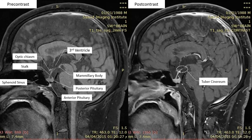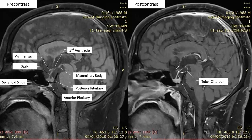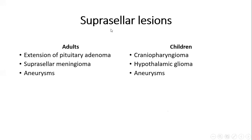This image shows how the pituitary stalk and the pituitary gland homogeneously take the contrast. Now we will talk about suprasellar lesions. The most common lesions in adults are extension from a pituitary adenoma, suprasellar meningioma, and aneurysms, while in children they are craniopharyngioma, hypothalamic glioma, and aneurysms.